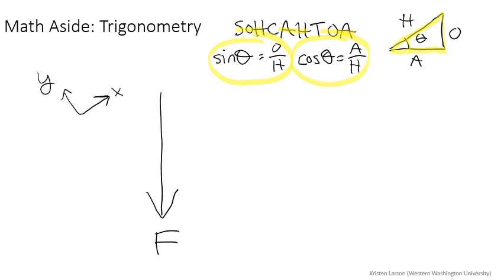The CAH means cosine of the angle is adjacent over hypotenuse, and the TOA means that the tangent is the opposite over the adjacent. This is a little mnemonic, a little trick for helping us remember.